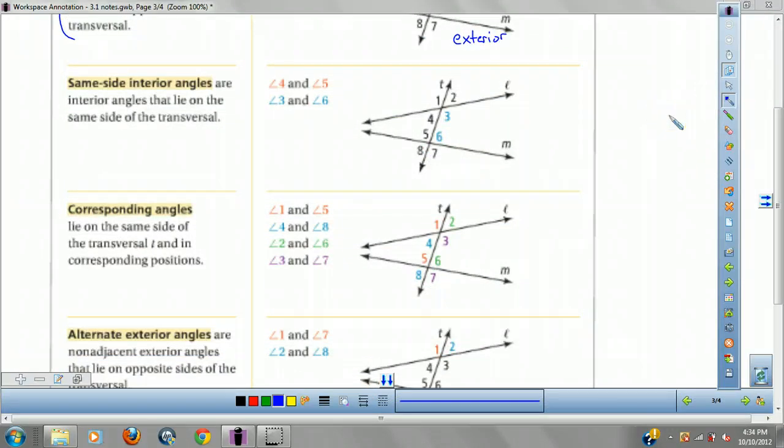Same rules apply. Corresponding are going to correspond with the ones on the bottom line. And so like angle 1 corresponds to angle 5 because they're both in the upper left-hand corner. Upper left hand, upper left hand. They correspond with each other. 6 and 2 are corresponding because they're both in the upper right-hand corner. 8 and 4 are corresponding because they're in the lower left-hand corner. 7 and 3 because they're in the lower right-hand corner. That's what makes them correspond. They correspond in their position with each other.